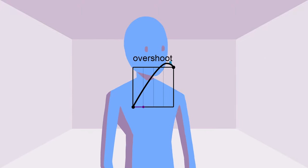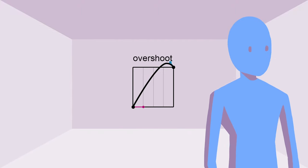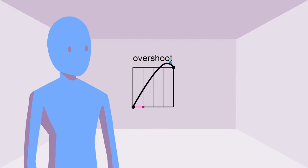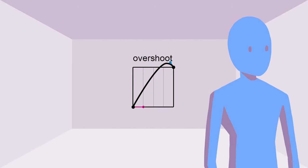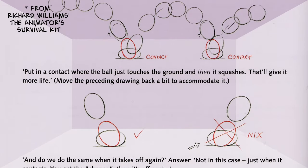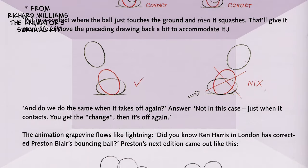Overshooting is when we actually want to go past our target point a little bit before sliding back to where we wanted to be. This usually gives things a nice punch to movement. And this is something to keep in mind for squash and stretch movement. When you hear about squash and stretch, you'll usually see it in context of a bouncing ball — what you're seeing is an object that can't overshoot because it's hitting the floor, so its body mass squashes and stretches because the energy has nowhere else to go.